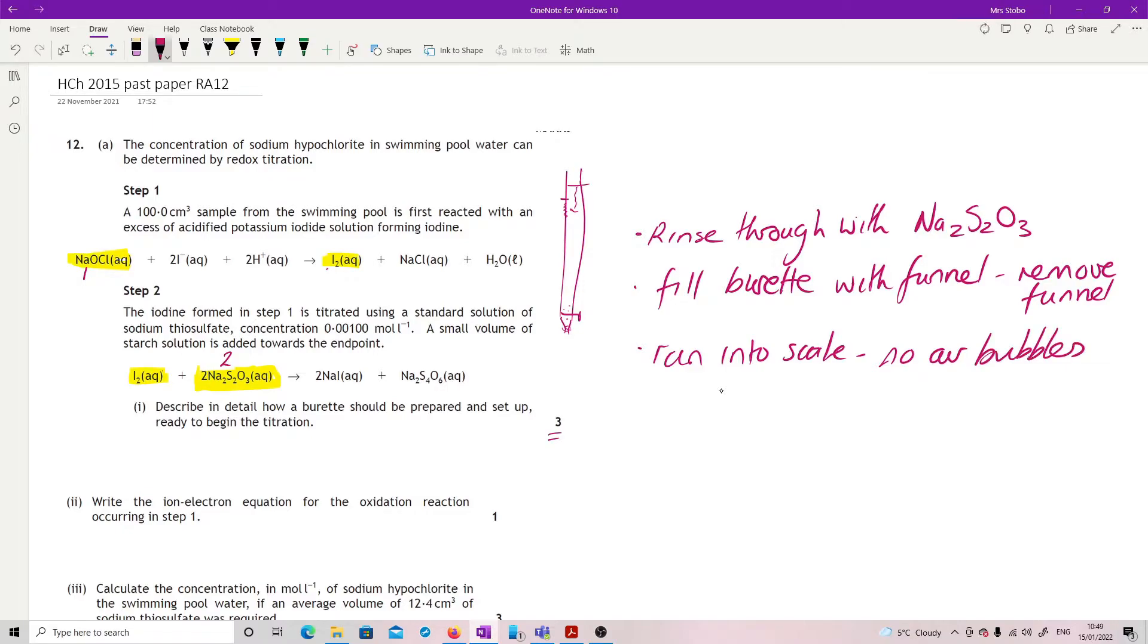So we run it in the scale will give you no air bubbles. And at which point you can then read off your starting position to the base of the meniscus as a standard. But that's, there's your kind of three points.